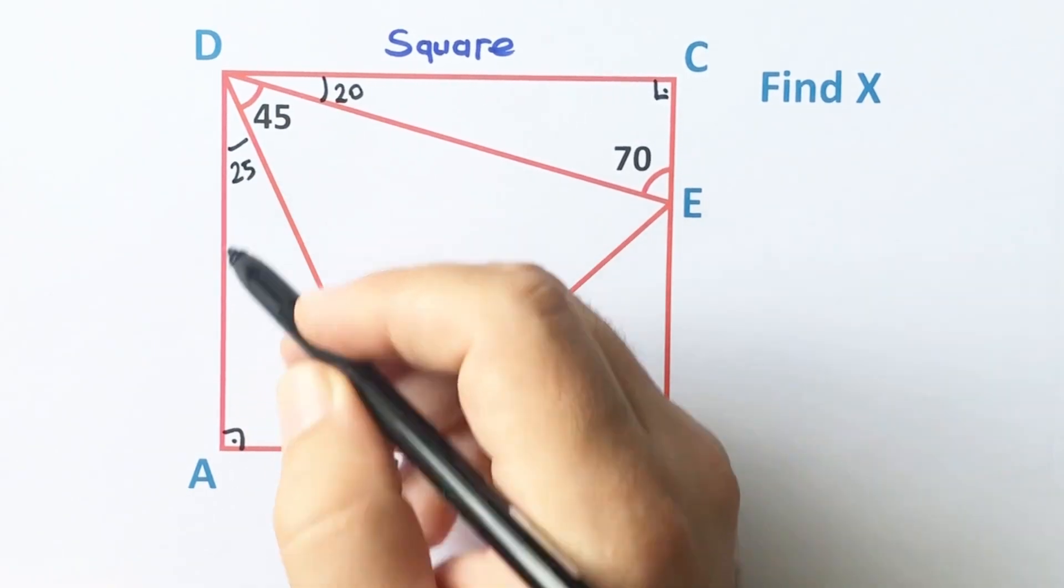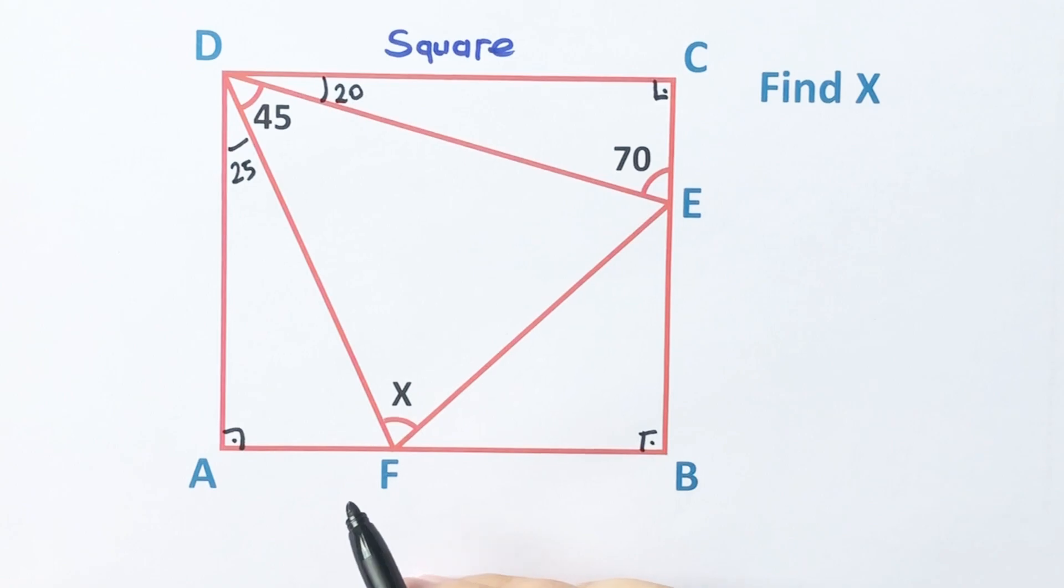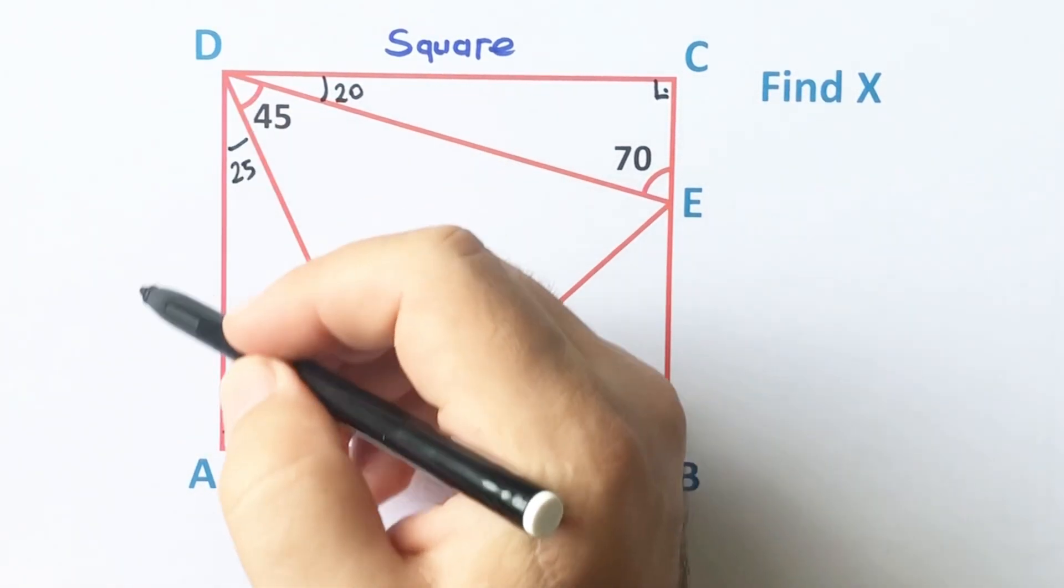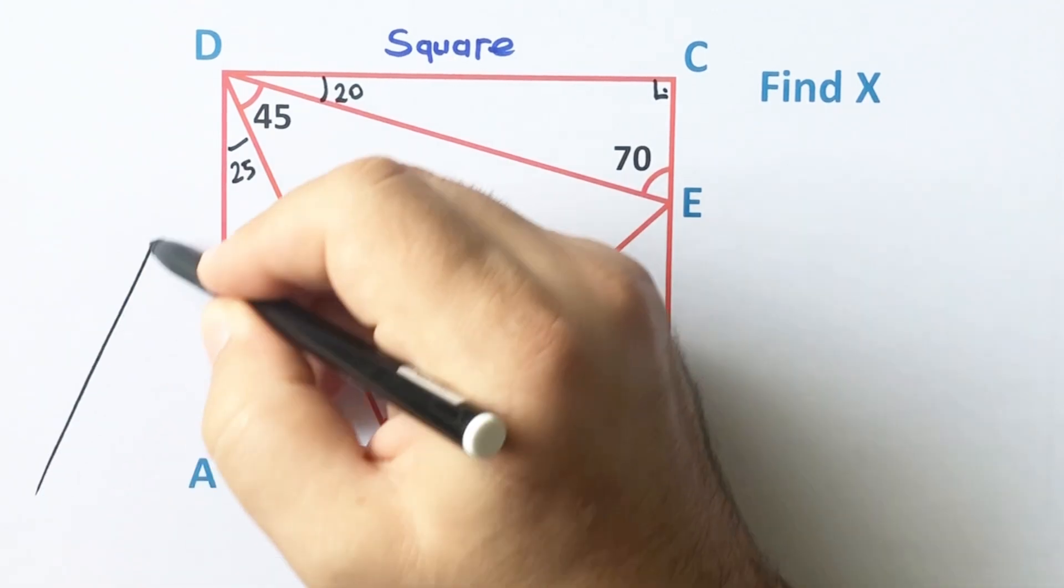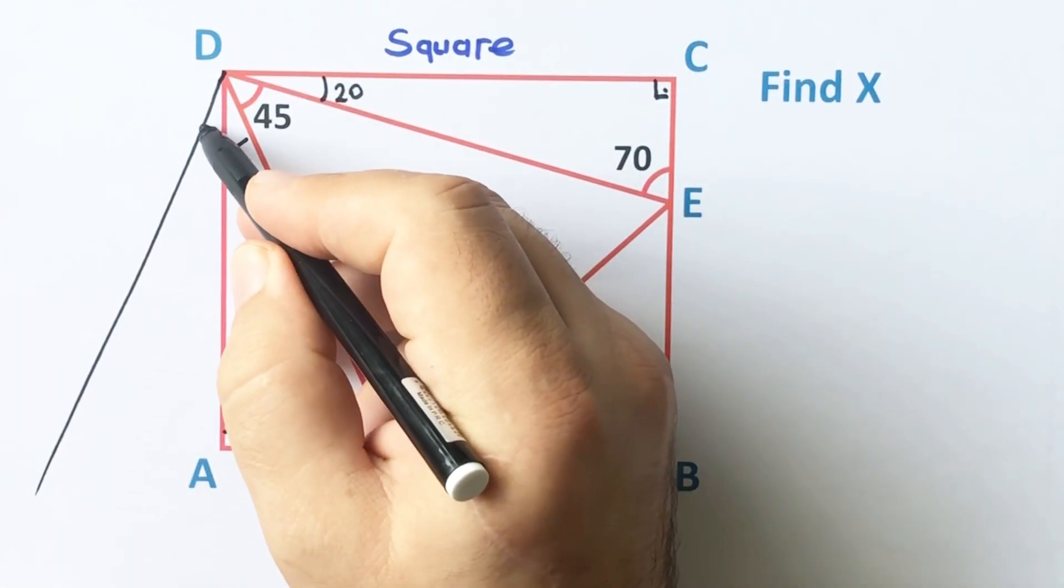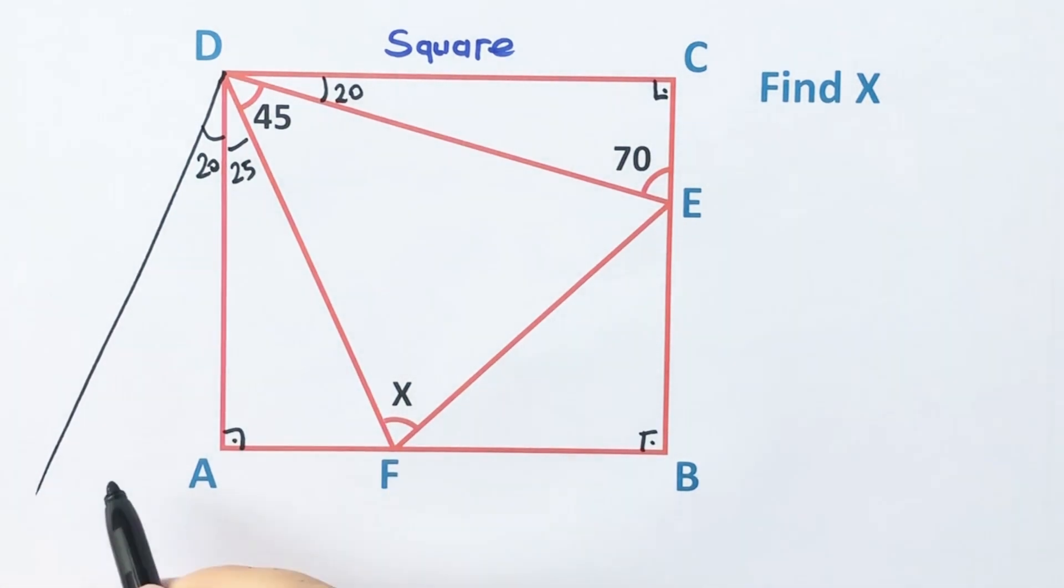And then if we get here 20 degrees like this and let's extend this corner, here must be 70 degrees, right?